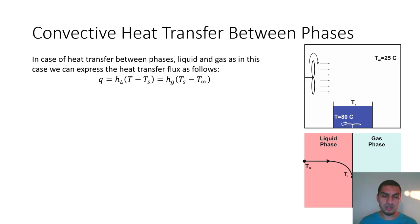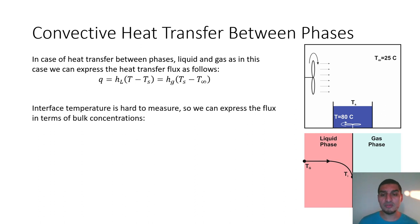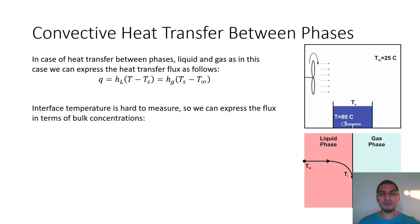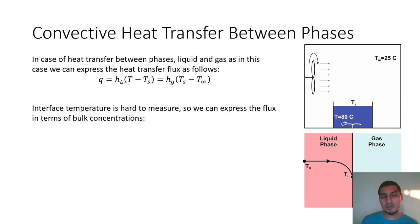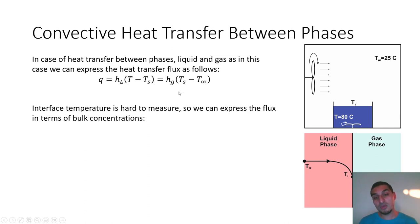We can represent the flux equation as: q = h_L × (T - T_s) = h_G × (T_s - T∞), where h_L is the liquid-phase heat transfer coefficient and h_G is the gas-phase coefficient. However, the challenge is that the surface temperature T_s is very hard to measure practically. Any thermometer measures the bulk, not the interface, so this is not something we can easily obtain.